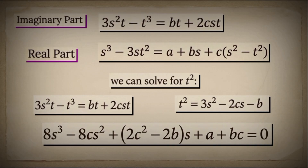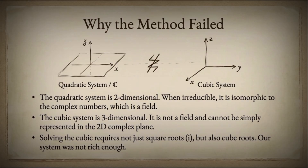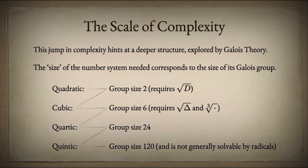Why did this happen? The answer lies in the structure of algebra itself. The quadratic system is two-dimensional; when it's irreducible, when it has no real solutions, it becomes a field — the complex numbers, ℂ. The cubic system is three-dimensional, but crucially it is not a field. Solving the cubic requires more than just square roots; it demands cube roots, something our two-dimensional complex number map simply cannot provide. The true structure of polynomial solutions is described by something called the equation's Galois group, a deep concept from abstract algebra. The quadratic equation has a Galois group of order 2 — it needs square roots, which the complex numbers can provide. The cubic equation has a Galois group of order 6 — it needs both square roots and cube roots. And the quintic has a Galois group of order 120. But this group is not solvable, which is the mathematical reason why no general formula using radicals exists for fifth-degree equations or higher. This is one of the most beautiful and surprising theorems in all of mathematics.